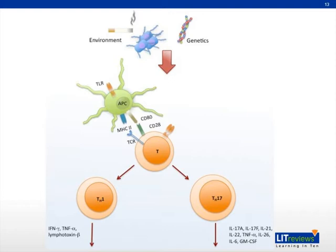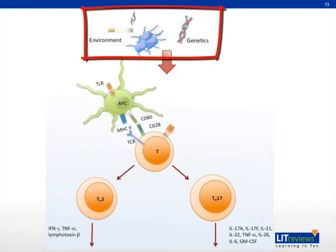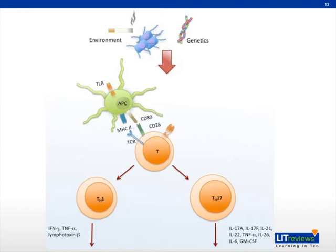This is a pictorial representation of what was just discussed. In patients with certain genetic backgrounds who are exposed to environmental triggers such as smoking or infection, antigen-presenting cells, usually in the form of dendritic cells, are activated. They, in turn, activate self-reactive T cells through a cell surface interaction. Two important subtypes of T cells, Th1 and Th17, are particularly important in promoting inflammation. They produce a number of cytokines, the most important of which, for our purposes, is TNF alpha.